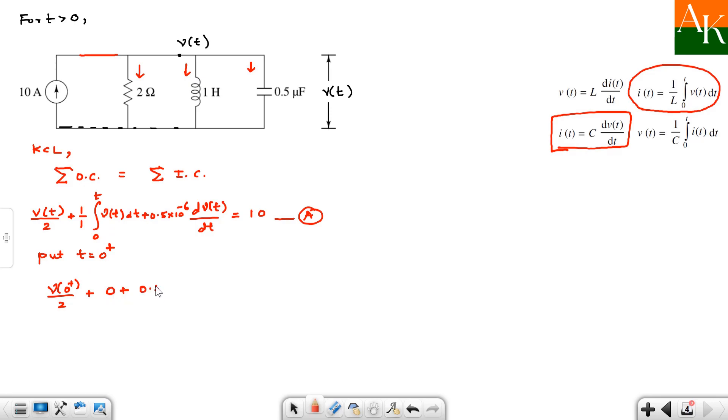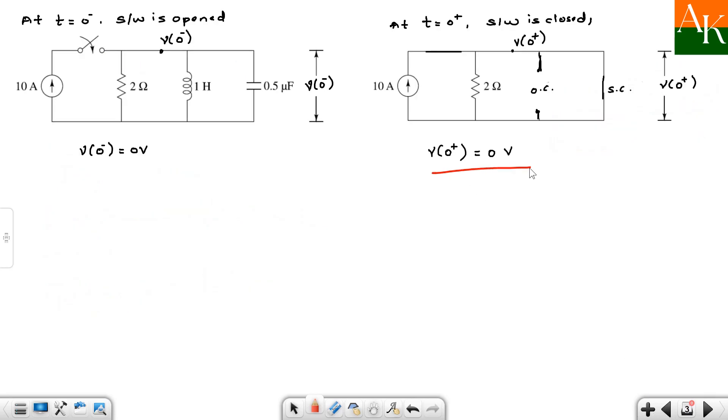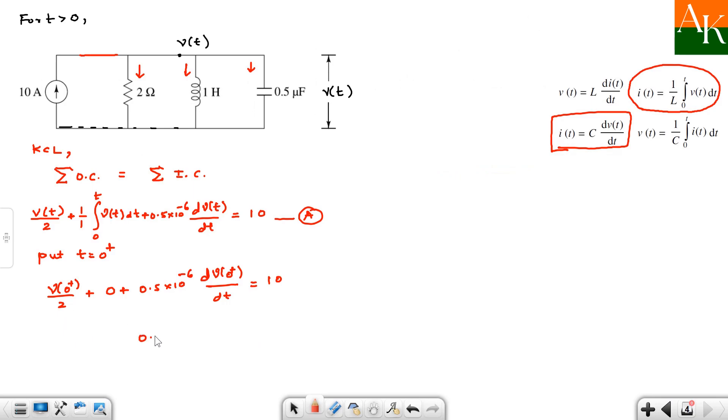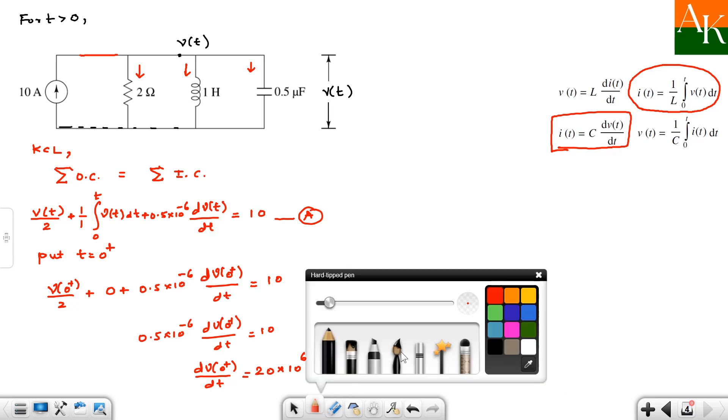And here we will have 0.5 into 10 to the power minus 6, dV 0 plus by dt equals 10. So you can substitute the value. V 0 plus value was, look, V 0 plus value was 0 volt. So this becomes 0. And then it turns out to be 0.5 into 10 to the power minus 6, dV 0 plus by dt equals 10. And one can easily calculate the value of dV 0 plus by dt. It will be 10 divided by 0.5. 10 divided by 0.5, this value becomes 20. And 10 to the power minus 6 in denominator becomes 10 to the power 6 in the numerator. And unit becomes volt per second. So dV 0 plus by dt is calculated.